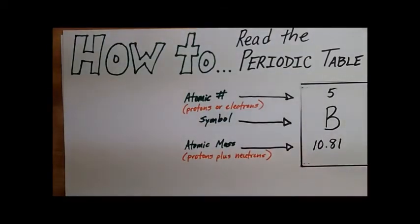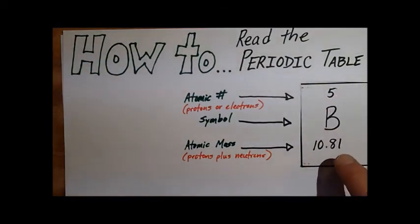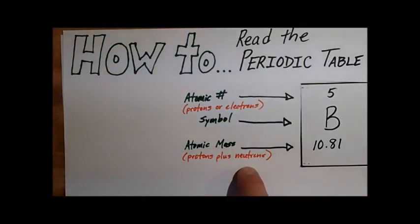To find the neutrons, what you can do is round this to a whole number - in this case up to 11. Then you subtract out the protons, so you take 11 minus 5, and by doing that it gives you 6. That tells you the number of neutrons - you have 6 neutrons for this atom.